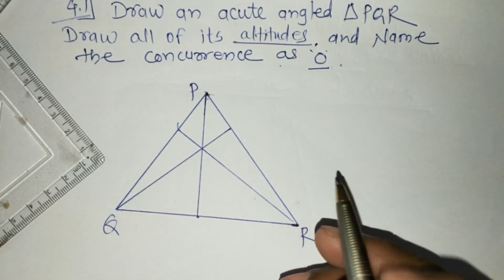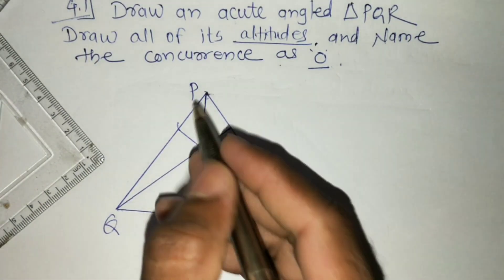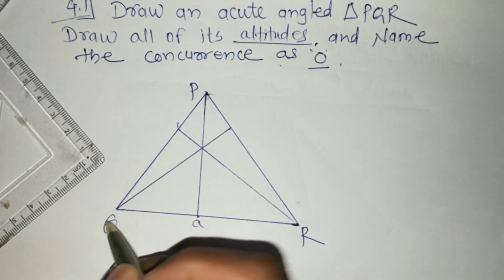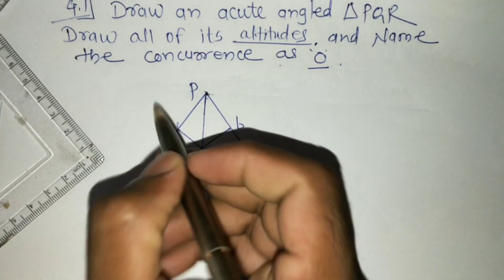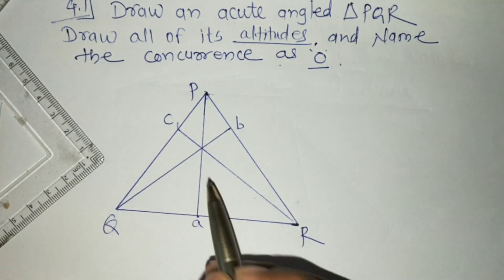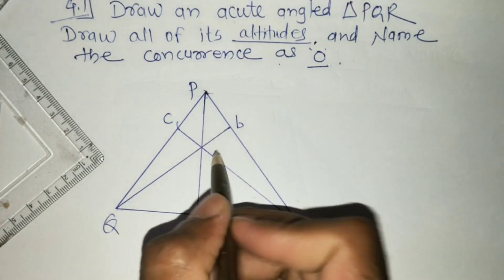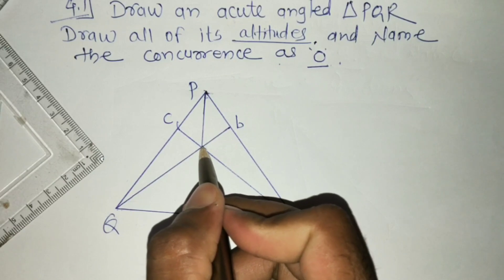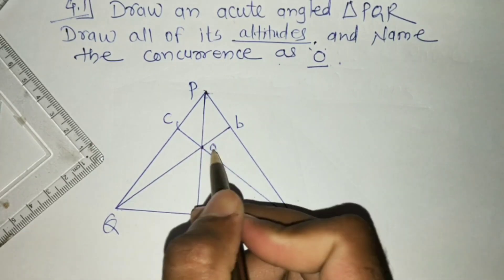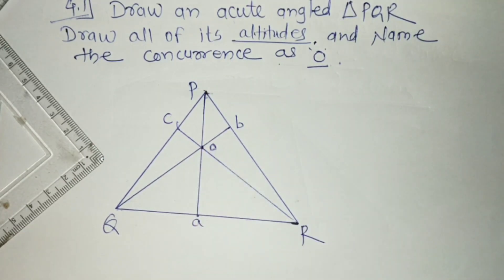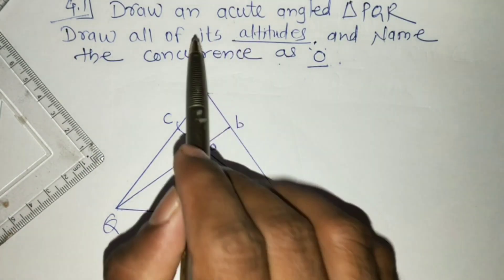So you can draw PA, QB, and RC. These are all its altitudes, and this is the centroid. So this is the simple method to draw its altitudes.